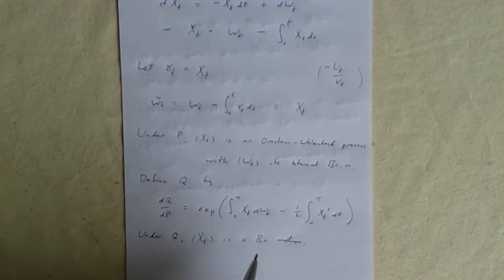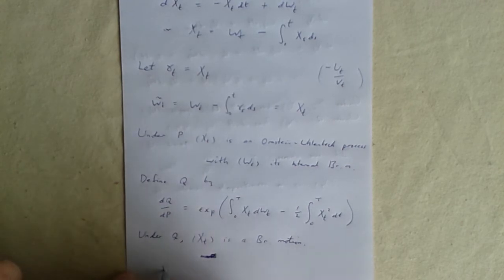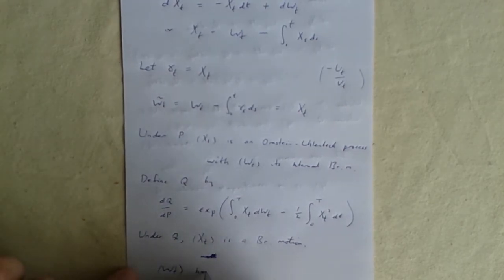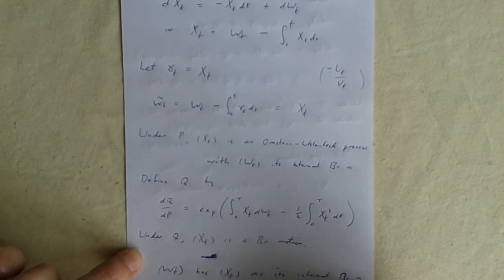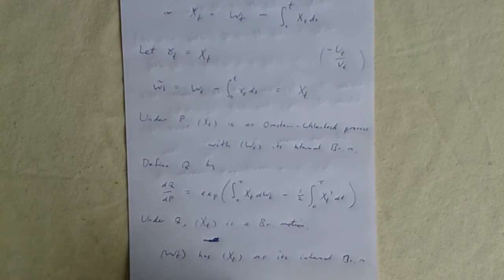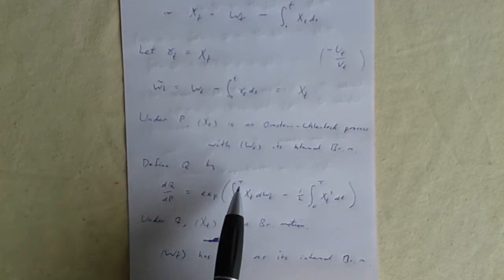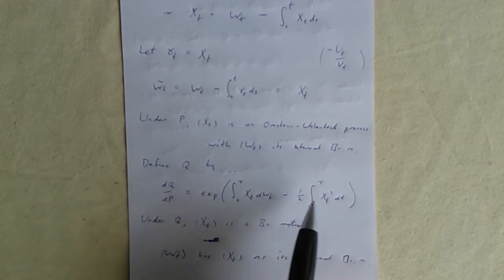And what happens to W? W was a Brownian motion before, now it becomes a Brownian motion plus drift. Wt tilde now has Xt as its internal Brownian motion. So we've completely turned things around.